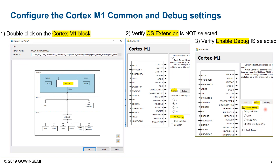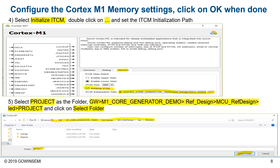Next, we'll work on the memory. The Cortex M1 memory settings point to the file created in Keil that gives the M1 instruction code embedded in the FPGA memory. To do that, we initialize the instruction TCM and its initialization path. The path should point to the folder that contains the LED project in the MCU reference design. Once the folder is selected, click OK.